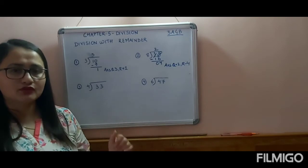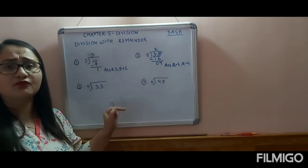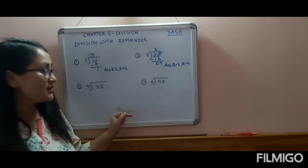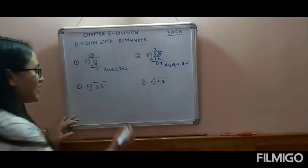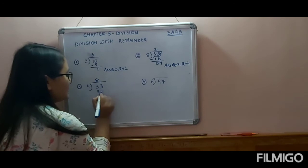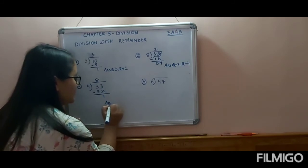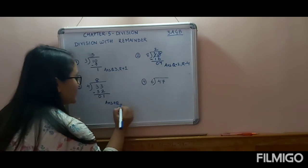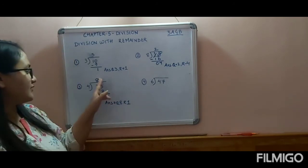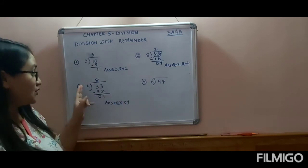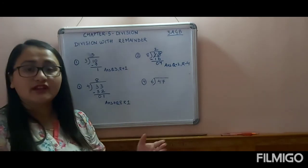Divide 33 by 4. Table of 4: 4 ones are 4, 4 twos are 8, 4 threes are 12, 4 fours are 16, 4 fives are 20, 4 sixes are 24, 4 sevens are 28, 4 eights are 32. We cannot write 4 nines are 36 as it exceeds 33, so we write 32. Then 33 minus 32 is 1. Quotient is 8 and remainder is 1. Check: 8 times 4 is 32, plus 1 is 33 — correct.